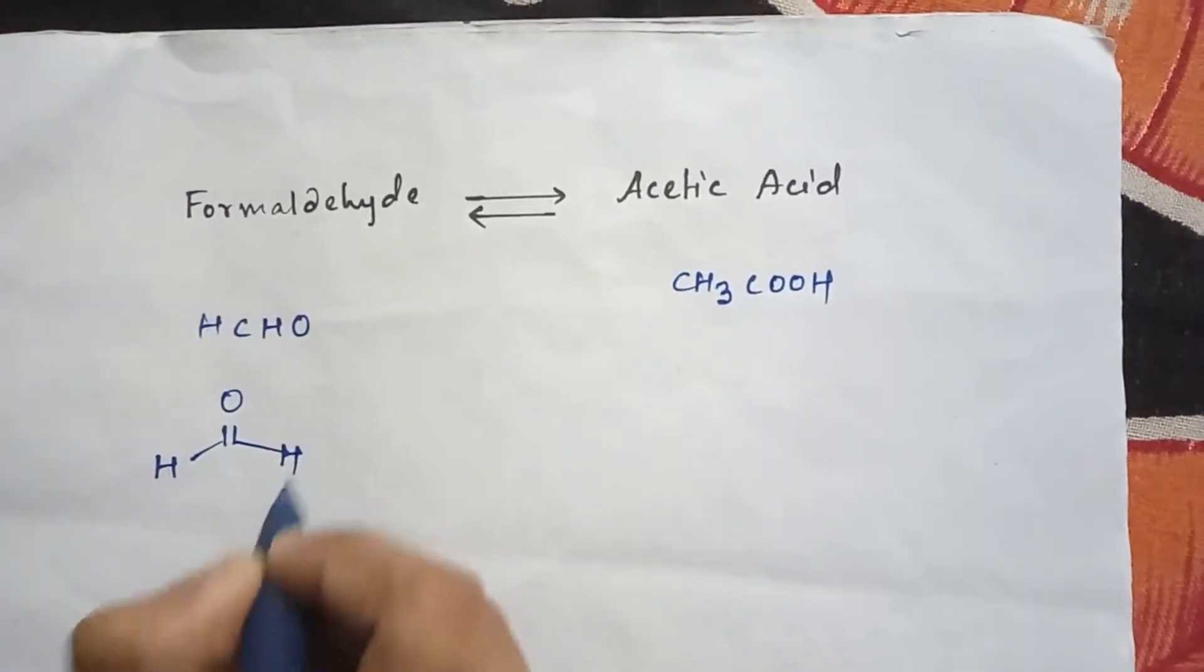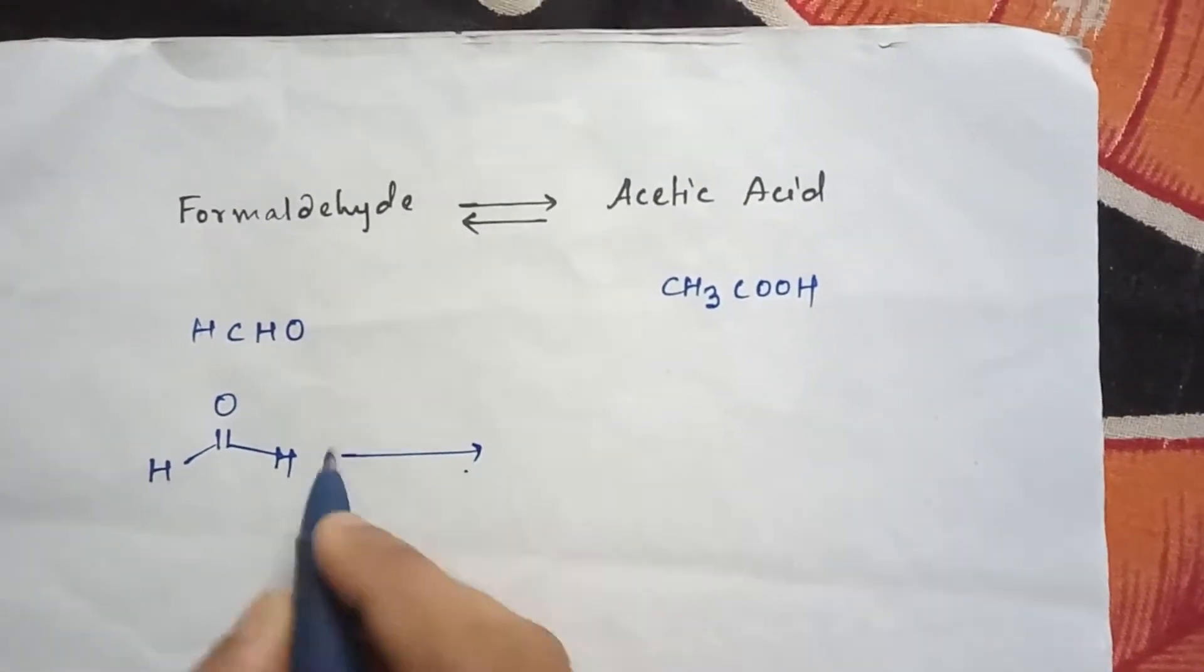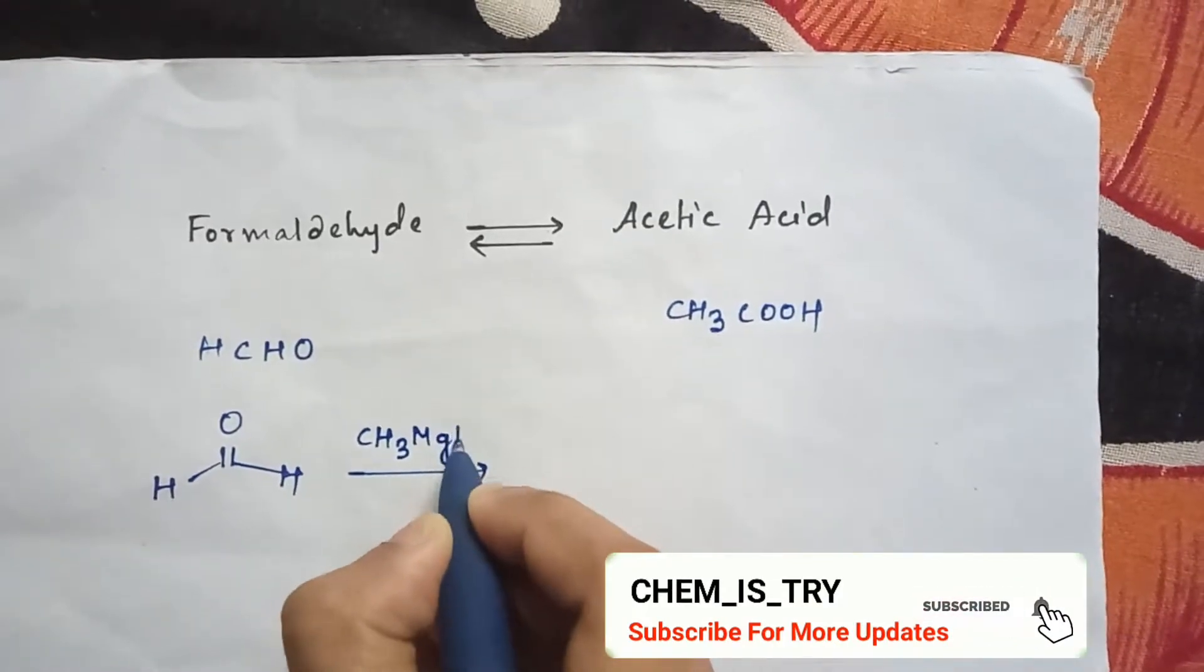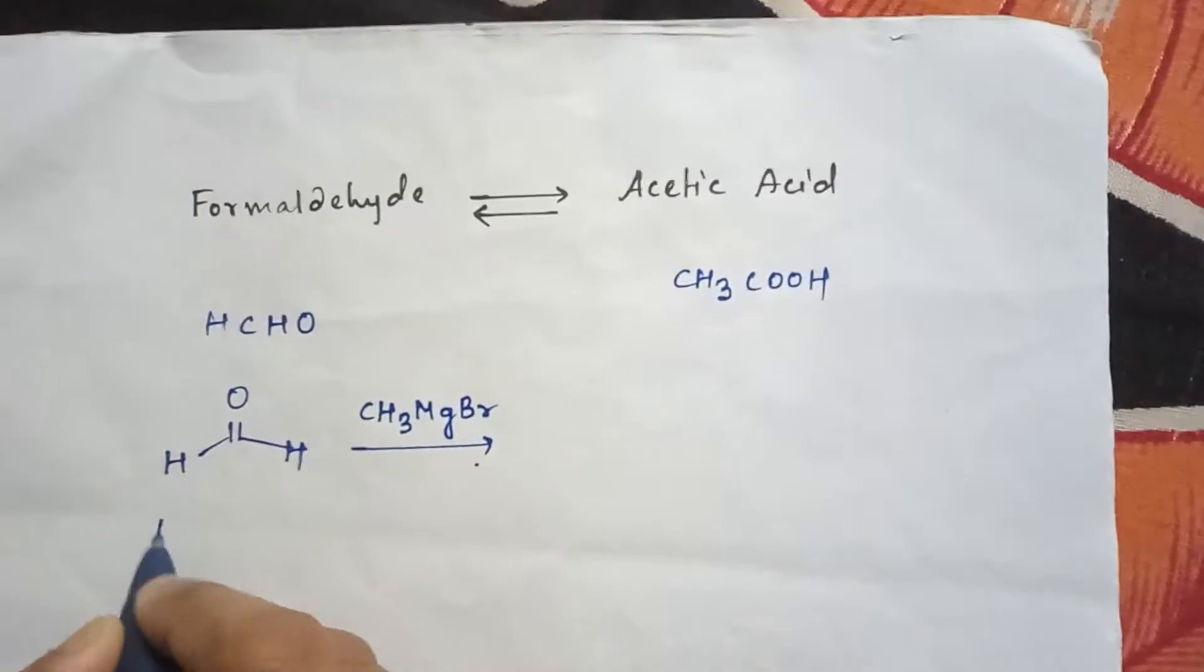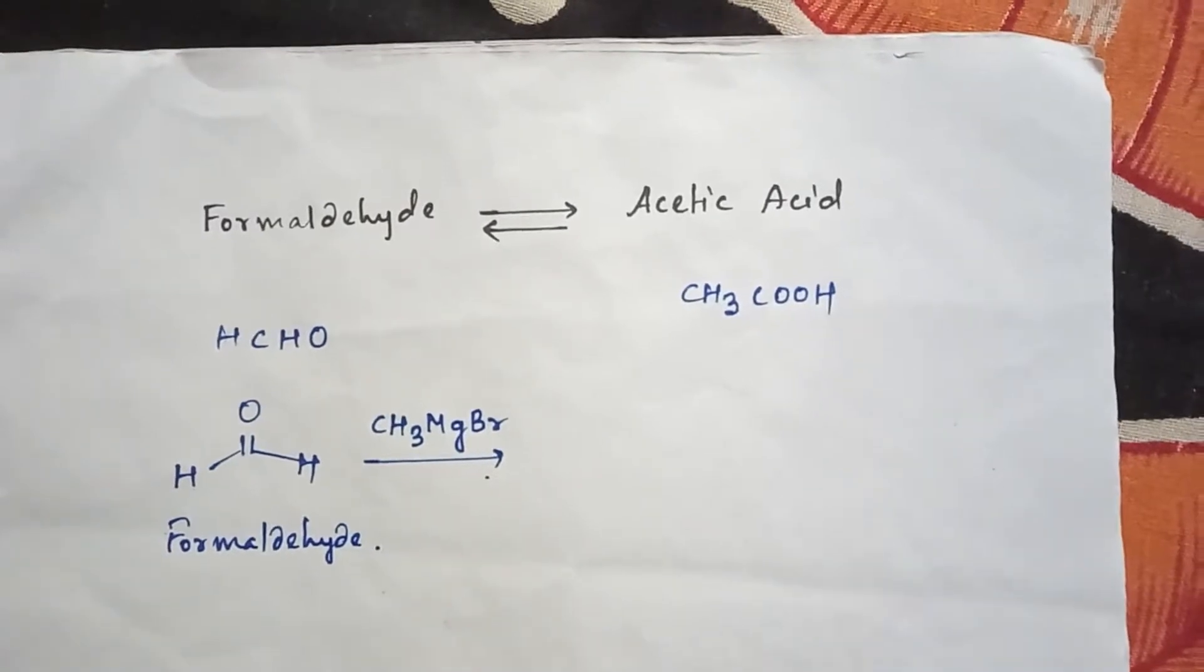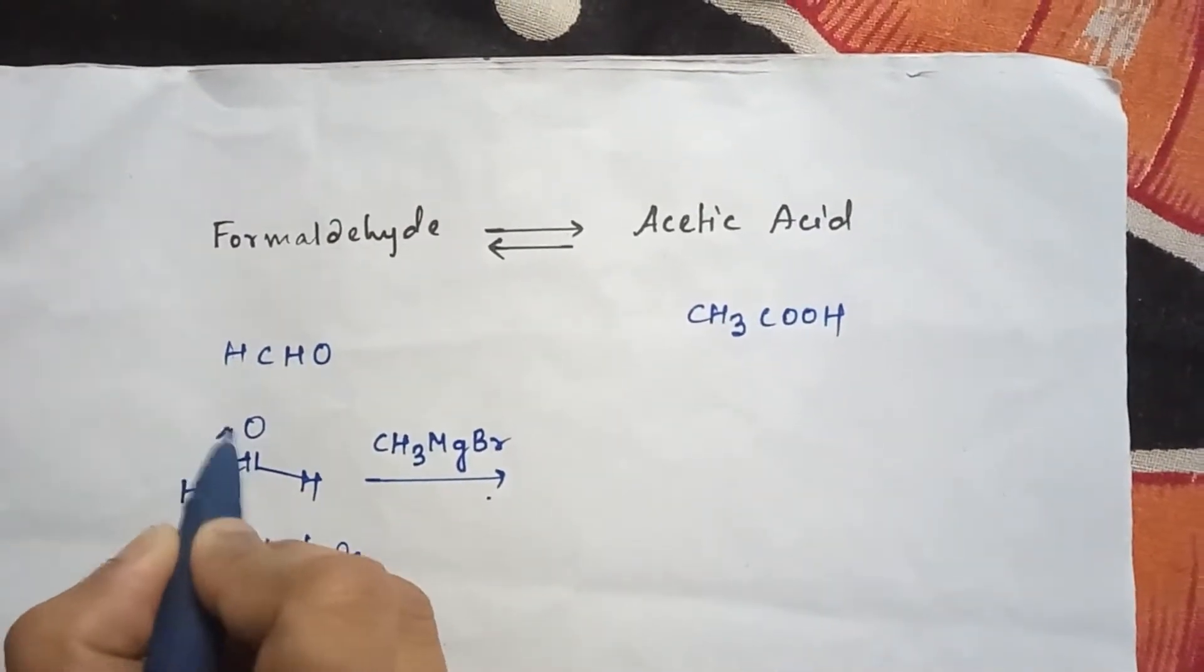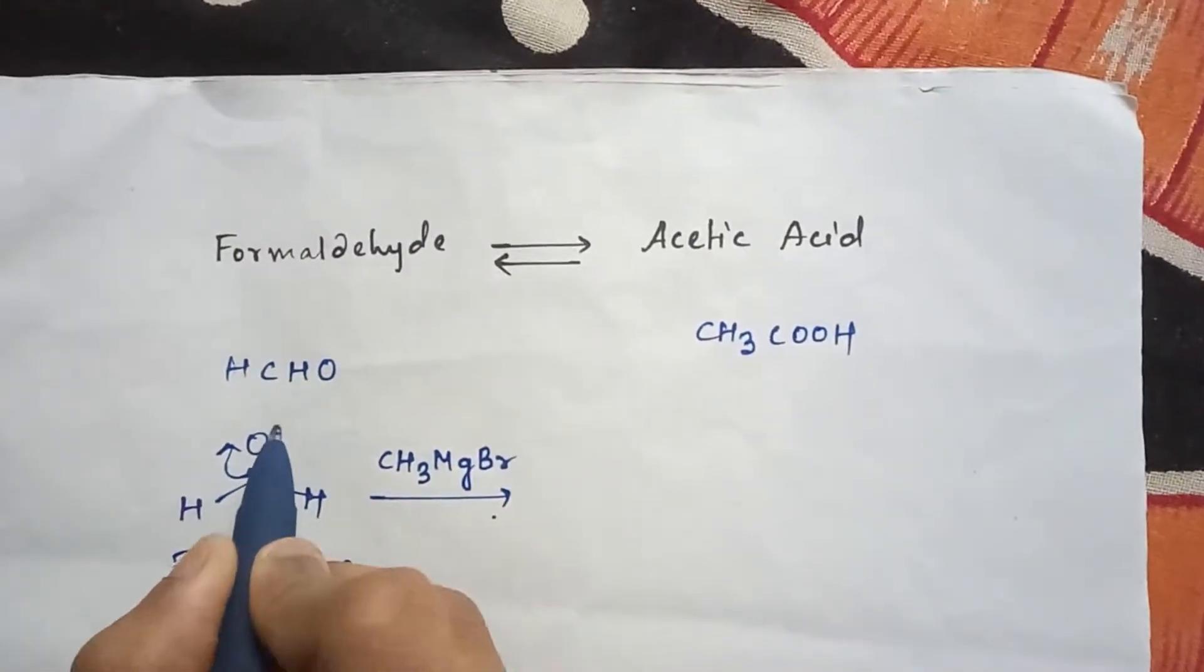Now if we react this formaldehyde with Grignard reagent CH3MgBr, then what will be the product? This double bond will break this way, then this O- will attract this MgBr.